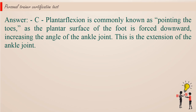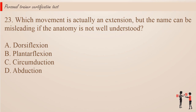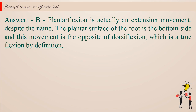Question 23. Which movement is actually an extension, but the name can be misleading if the anatomy is not well understood? a. Dorsiflexion. b. Plantar flexion. c. Circumduction. d. Abduction. Answer: b. Plantar flexion is actually an extension movement, despite the name. The plantar surface of the foot is the bottom side and this movement is the opposite of dorsiflexion, which is a true flexion by definition.